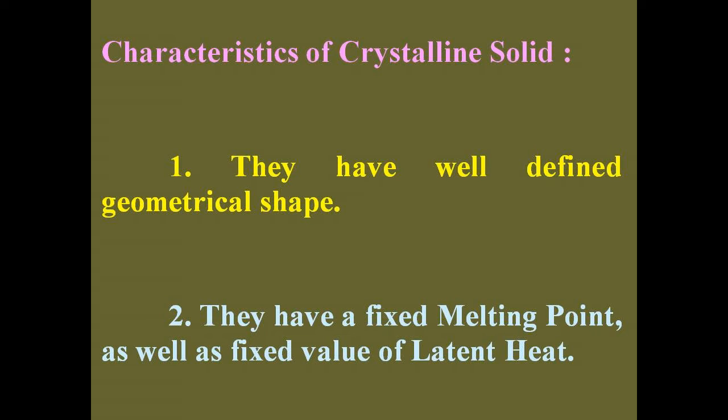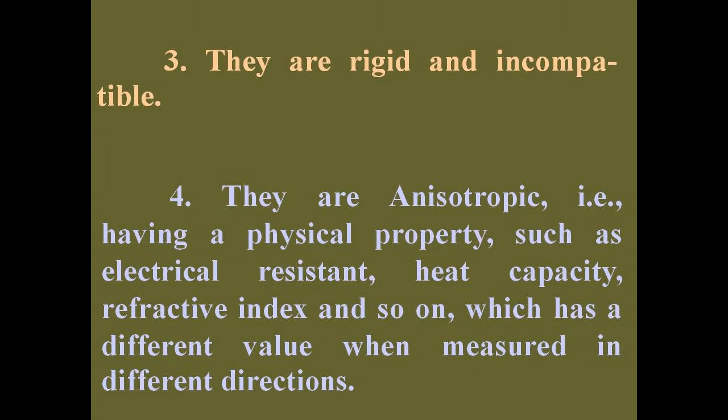Now we discuss about the characteristics of crystals. Firstly, they have a well-defined geometrical shape. Secondly, they have a fixed melting point as well as a fixed value of latent heat. Thirdly, they are rigid and incompressible. Fourthly, they are anisotropic — that is, physical properties such as electrical resistance, heat capacity, refractive index, and so on have different values when measured in different directions.